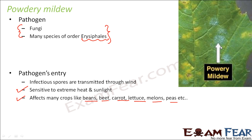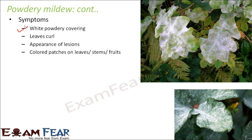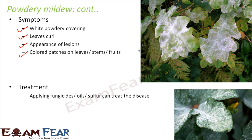In the picture you can see how powdery mildew looks — a white colored powder appears on the leaf surface. Symptoms include a white powdery covering on leaves, curling of leaves, and colored patch lesions on leaves, stems, or fruits. Leaves of oak and pumpkin can both be impacted. For treatment, applying fungicides, oils, or sulphur can treat the disease.